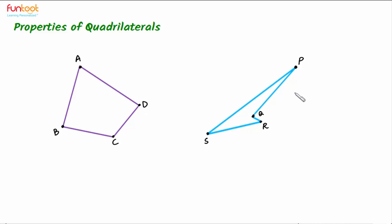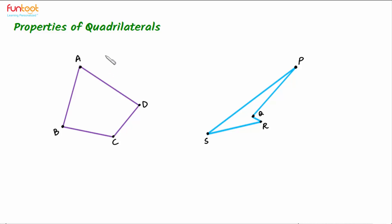In quadrilateral PQRS, the adjacent sides are PS and SR, and PQ and QR. The opposite sides are PS and QR, and PQ and SR form the other pair of opposite sides. A quadrilateral has four vertices, as we can see in both quadrilaterals ABCD and PQRS.